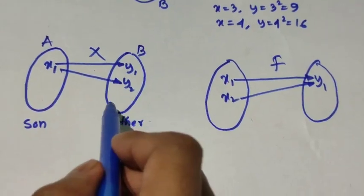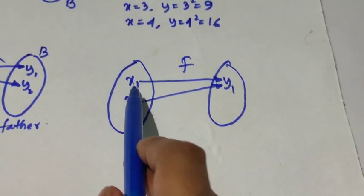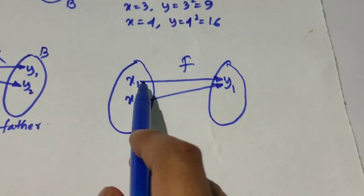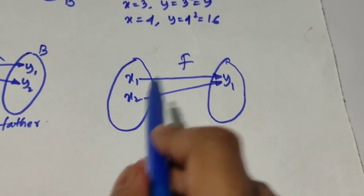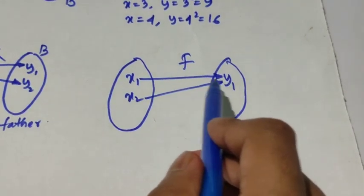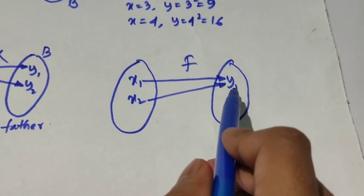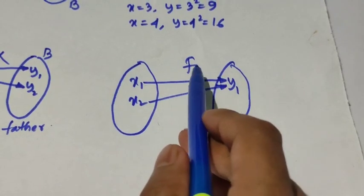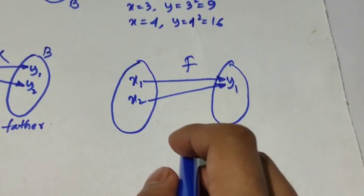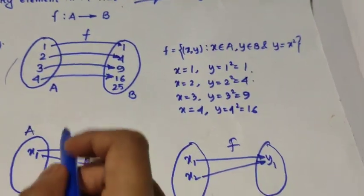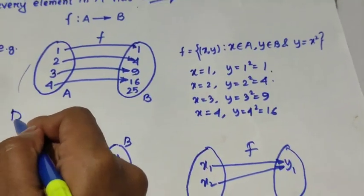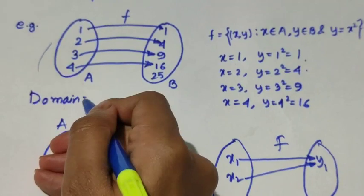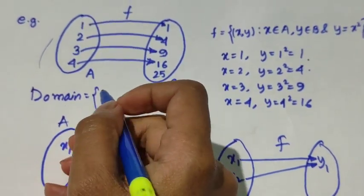In this case, x1 and x2 are two sons, so it is possible that x1 and x2 have one father — that is, their father is the same, meaning x1 and x2 are brothers. This is biologically possible, so this is a function.